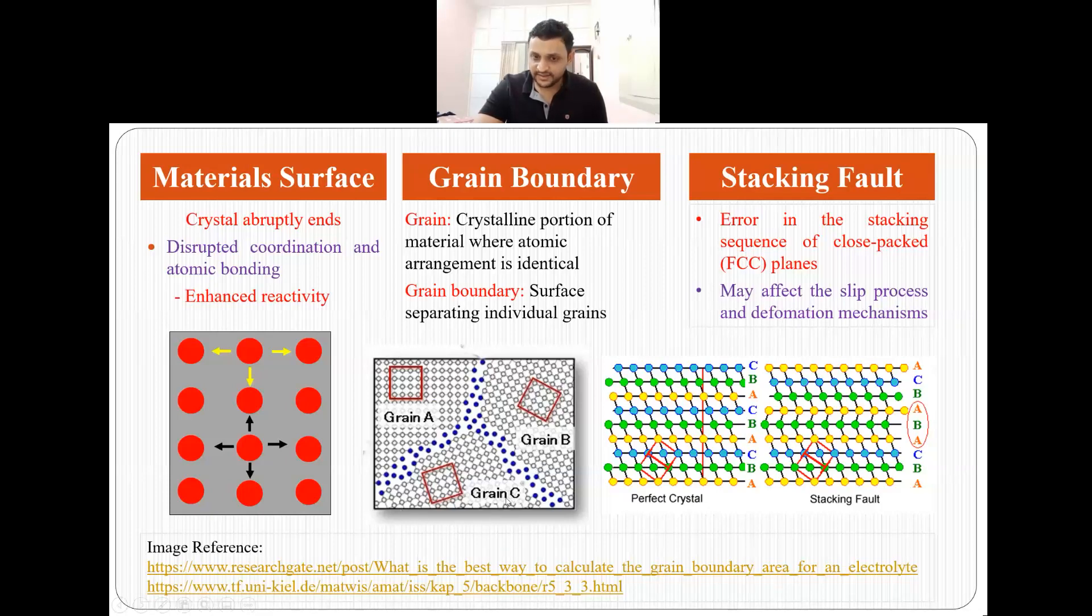Grain A, the atomic arrangement is in this direction. Grain C, the atomic arrangement is in this direction and grain B, the atomic arrangement is in this direction. But there is a boundary present between individual grains. And this boundary or this surface is what we call as grain boundary. So grain boundary is a surface which separates the individual grains.